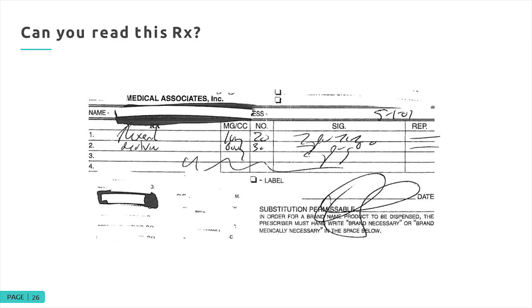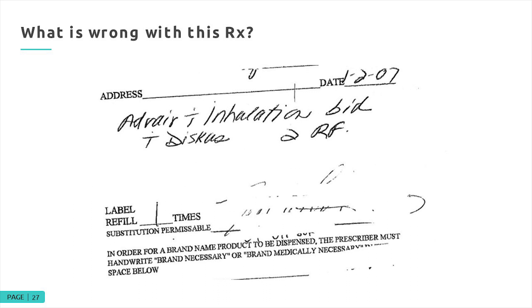Here's another illegible prescription. The top line was Flexeril 10 mg, number 20, one by mouth TID — the prescriber's '1' had no dot over it. The second line was Motrin 600 mg, dispense 30, one by mouth every six hours. Another prescription for Advair shows everything done well except the strength is missing — no way to know if it's Advair 100, 250, or 500 — and the refill count is contradictory, showing both two refills and one refill. Always requires a phone call.